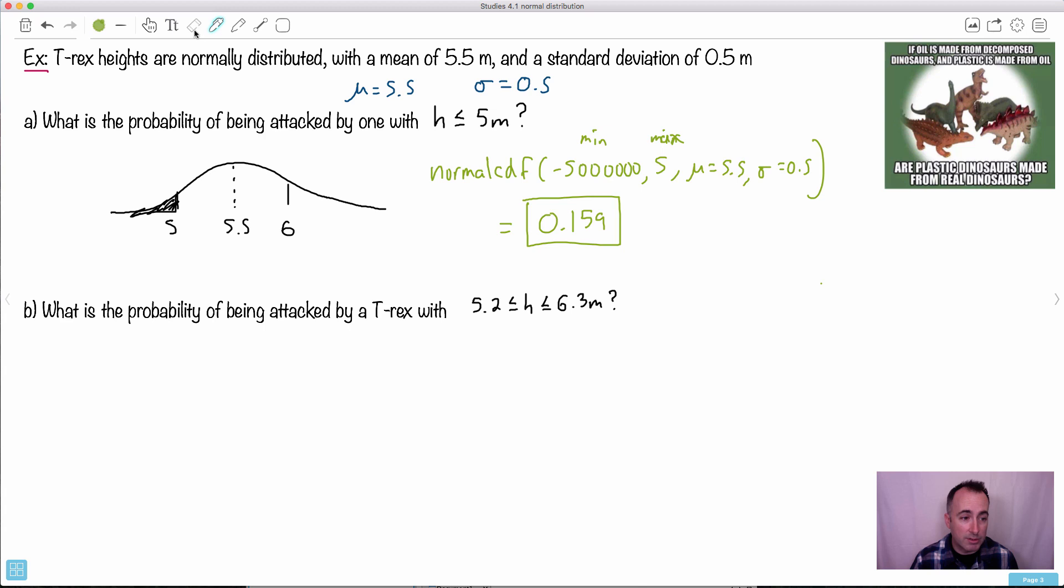Now we can do the second part as well. So what's the probability of being attacked by a T-Rex with a height between these two? That we can, of course, do. Just in case you want to see the diagram of it, I'm just going to try to draw it again. So this is 5.5, this over here is 6, this over here is 5. That's sort of the important stuff here. If we want it between 5.2 and 6.3, we can do that. So somewhere maybe here and somewhere over here. So we want this area here.